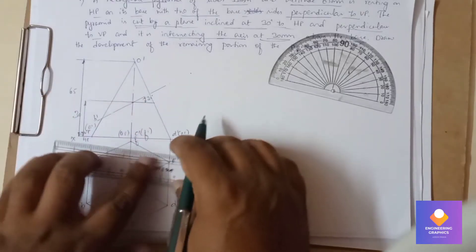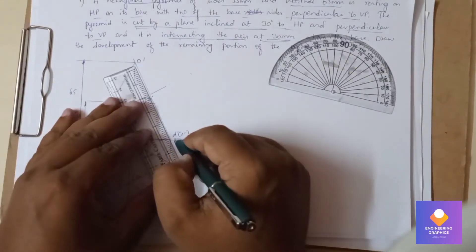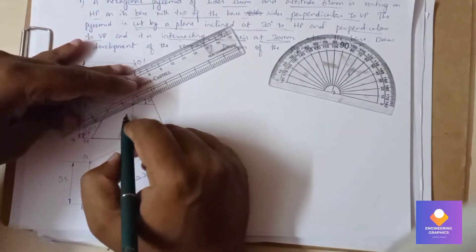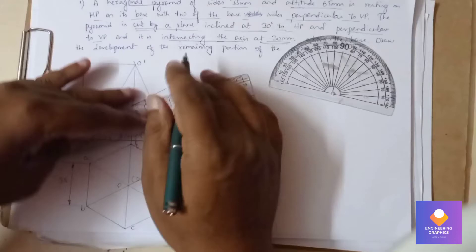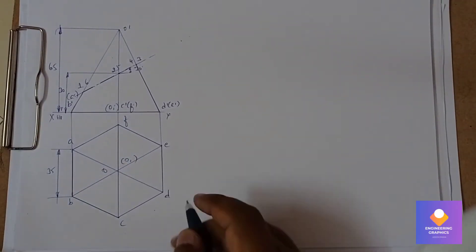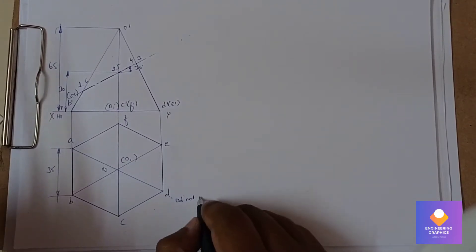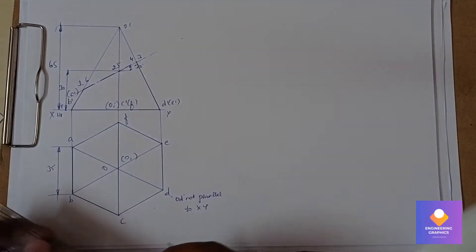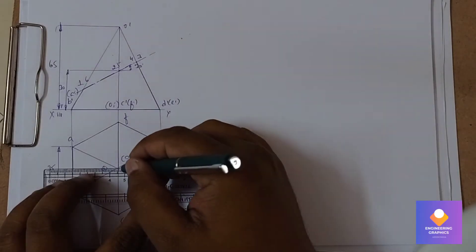Dark the portion cut by the section plane. Mention the namings on the section plane: 1, 2, 3, 4, 5, 6. The slant edges are parallel to the XY line, but the OD length is not parallel to the XY line, so we need to rotate the OD length to find the true length.